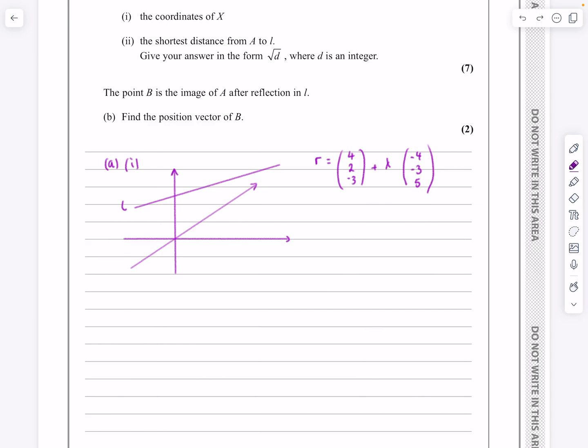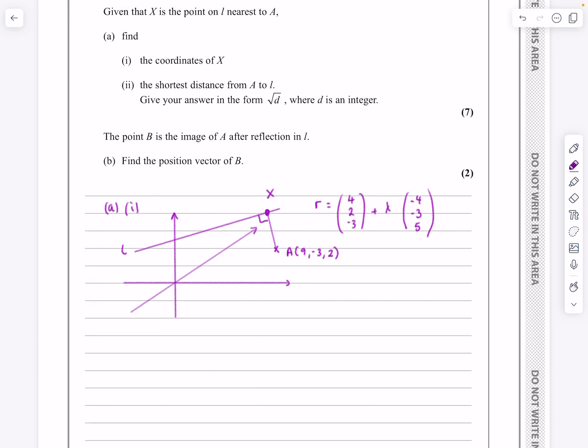Now what does the question say? The question says we've got point 9, minus 3, 2. Okay, so I've got point here somewhere, A, which is 9, minus 3, 2. And what they tell me is that then X is on the line L but nearest to A. So what they're saying from that then is that X is going to be this point here where that is 90 degrees. So I'm beginning to form a plan for doing this then. What I know that I can do is if they're at 90 degrees, then the dot product of this one and this one is going to be equal to 0.